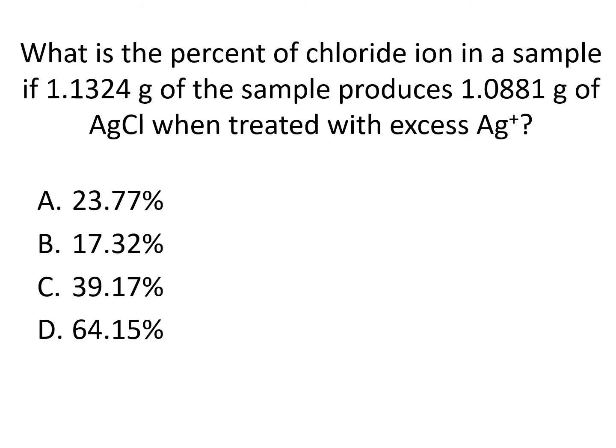What is the percent of chloride ion in a sample if 1.1324 grams of the sample produces 1.0881 grams of silver chloride, AgCl, when treated with excess silver ion, Ag⁺? If you've got some chloride ion making up part of a sample, it's reacting with silver ion to make silver chloride. Your job is to find the percent of the chloride ion in the sample based on the amount of silver chloride produced. Is the answer A) 23.77%, B) 17.32%, C) 39.17%, or D) 64.15%?